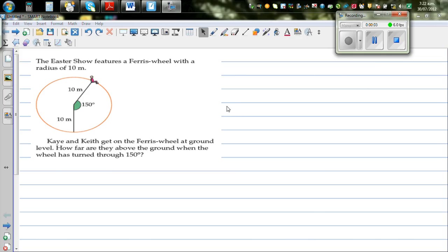The Easter show features a Ferris wheel with a radius of 10 meters. Now this is a diagram of a Ferris wheel, and this Ferris wheel has a radius of 10 meters.